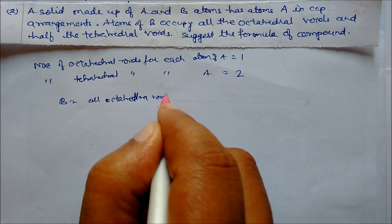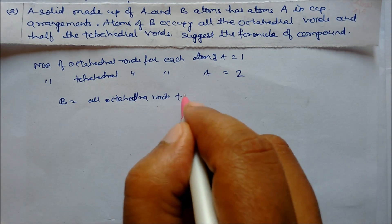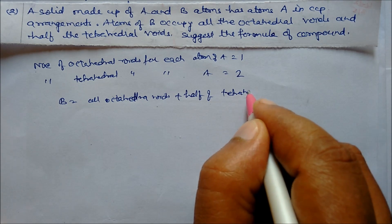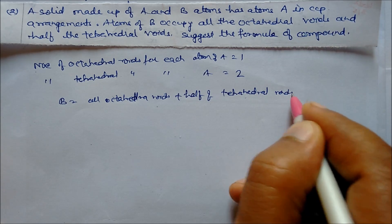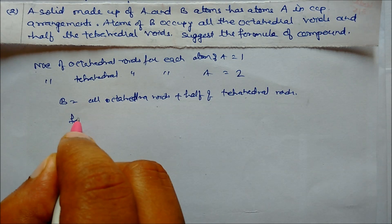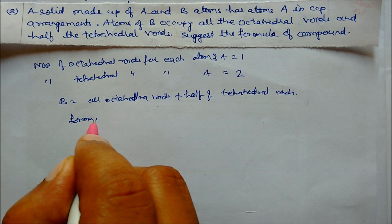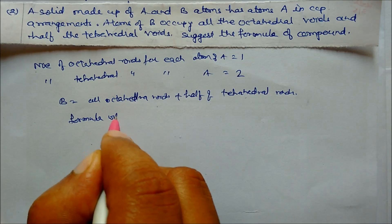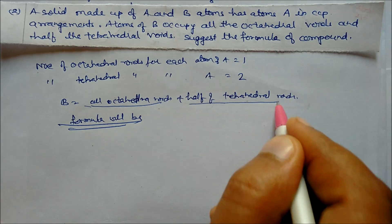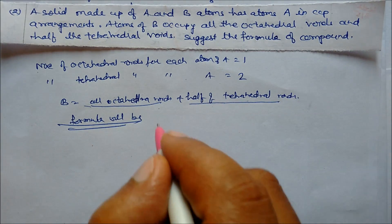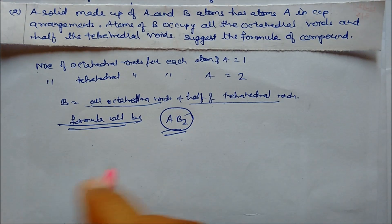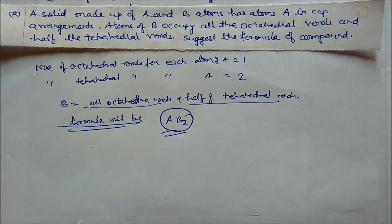B occupies all octahedral voids plus half of the tetrahedral voids. So the number of B atoms = 1 (octahedral) + half of 2 (tetrahedral) = 1 + 1 = 2. Therefore, the formula is AB₂.